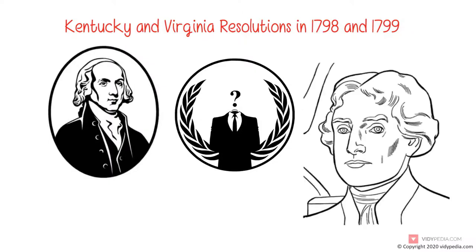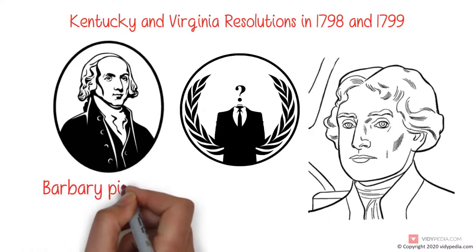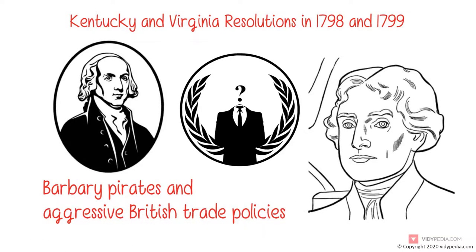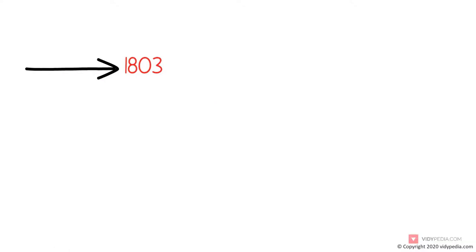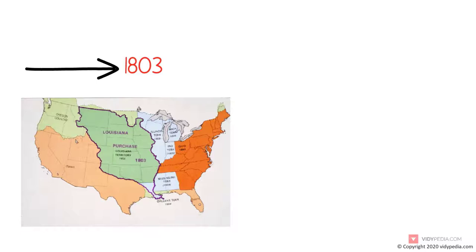As president, Jefferson pursued the nation's shipping and trade interests against Barbary pirates and aggressive British trade policies. Starting in 1803, Jefferson promoted a Western expansionist policy, organizing the Louisiana Purchase, doubling the nation's land area.